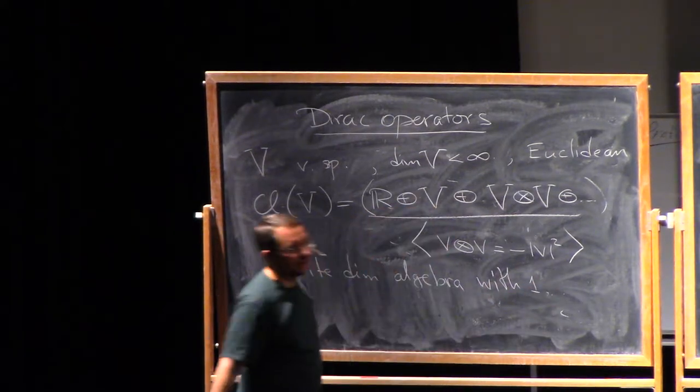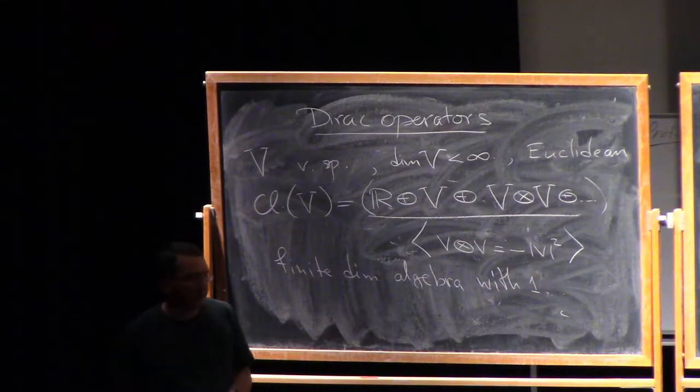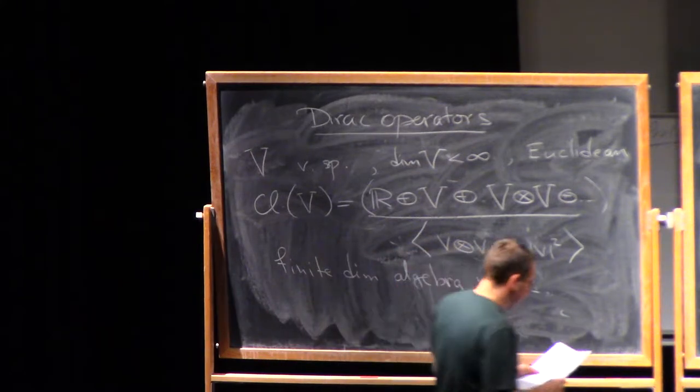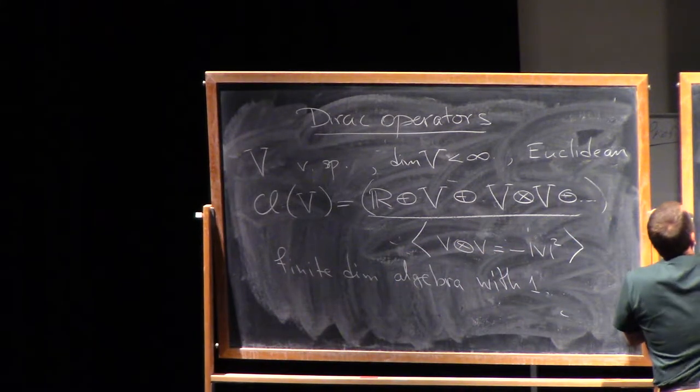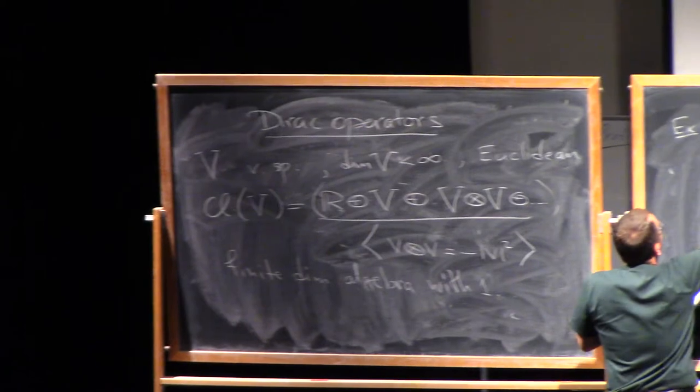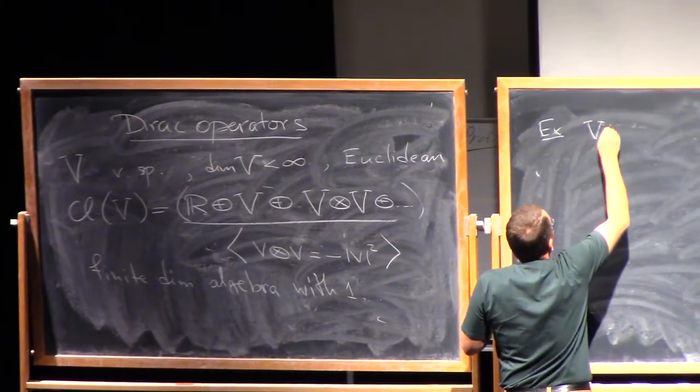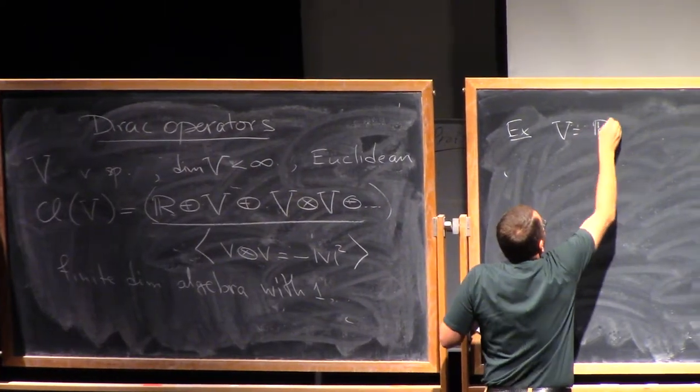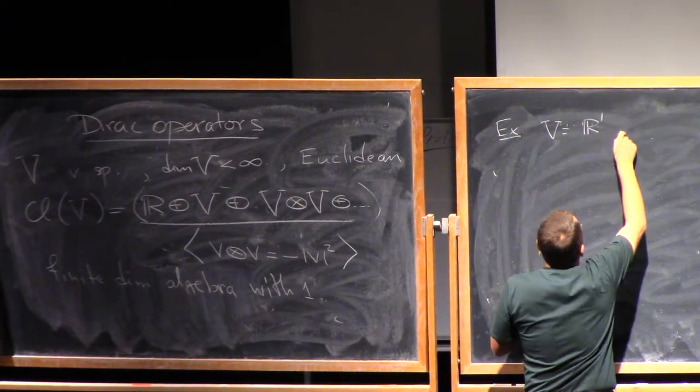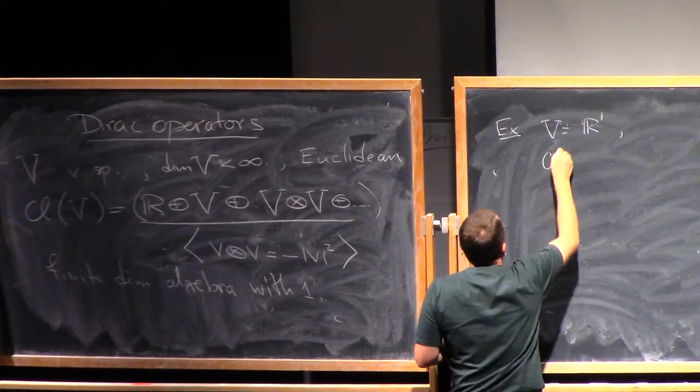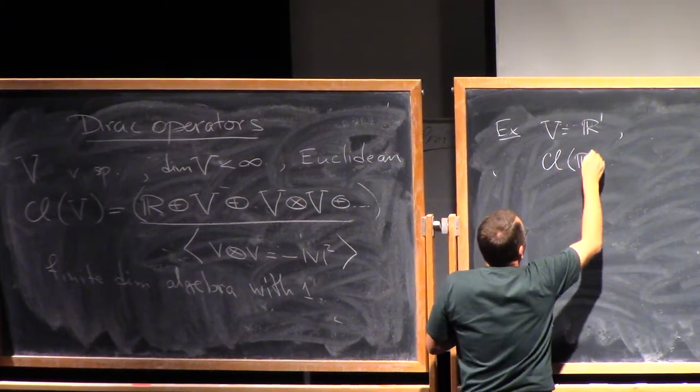with an identity. And in fact, it's an associative algebra. So let me give you an example. So if you take V to be one-dimensional, so R1, then what we see is that the Clifford algebra of R1 is generated by two elements